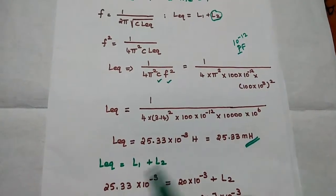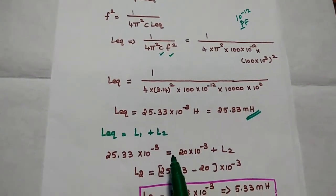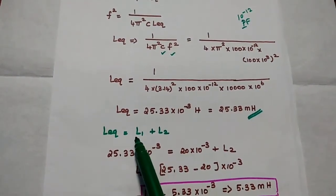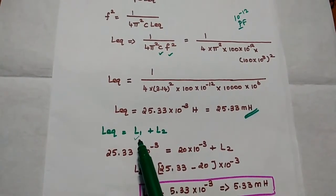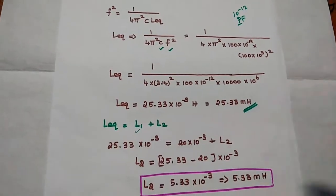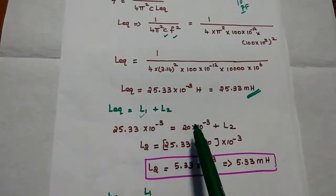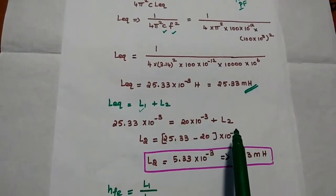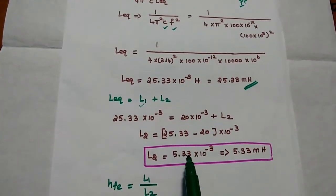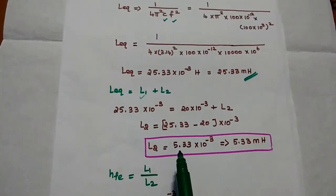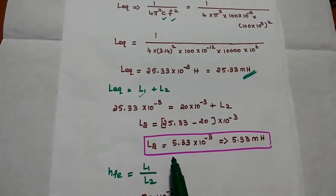We have obtained the equivalent inductance value equal to L1 plus L2. As we know the value of L1, we substitute L_equivalent and L1 into the formula: 25.33 into 10 to the power minus 3 equals 20 into 10 to the power minus 3 plus L2. Moving the L1 value to the other side, we get L2 is equal to 5.33 into 10 to the power minus 3, that is 5.33 millihenry.